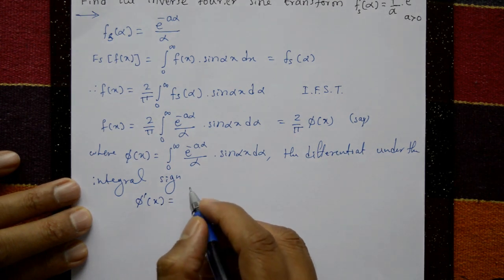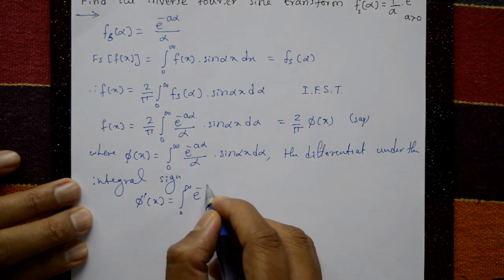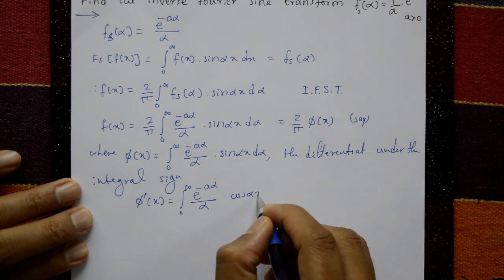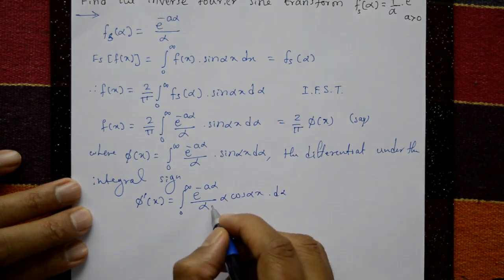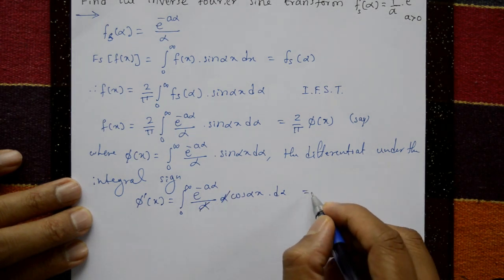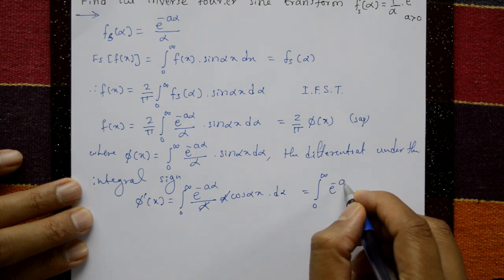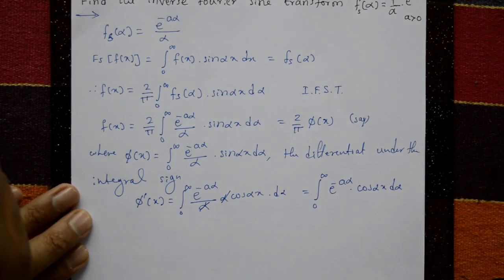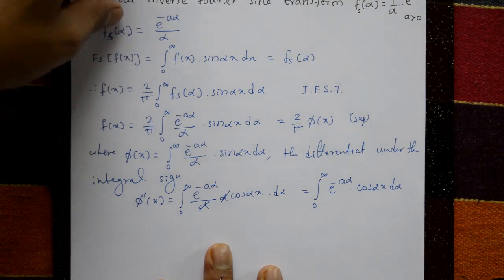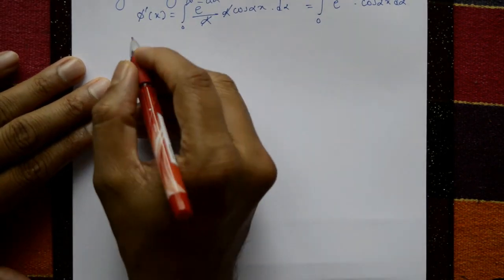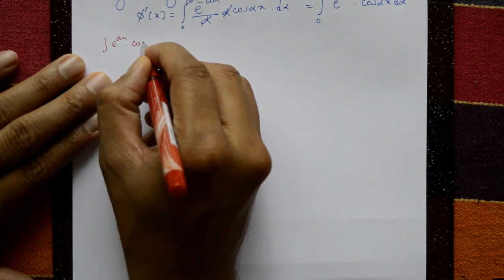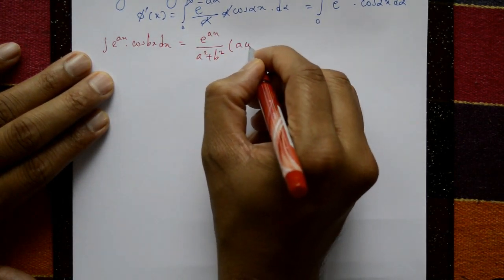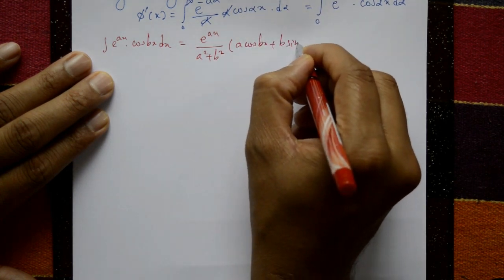Differentiating φ(x) with respect to x: φ'(x) = ∫₀^∞ e^(−aα)/α · cos(αx) · α dα. The α terms cancel, giving φ'(x) = ∫₀^∞ e^(−aα) cos(αx) dα. Using the standard formula: ∫ e^(ax) cos(bx) dx = e^(ax)/(a² + b²) · [a cos(bx) + b sin(bx)].